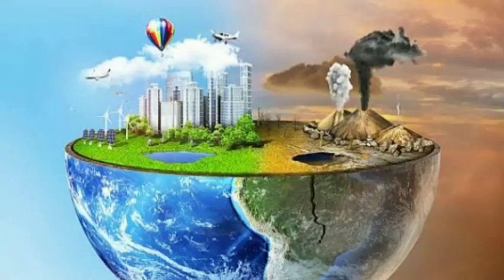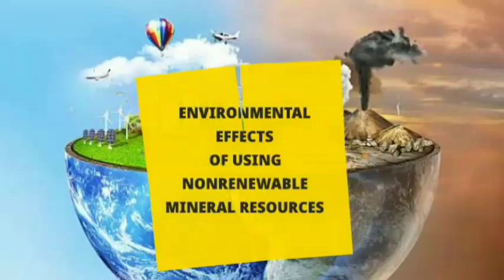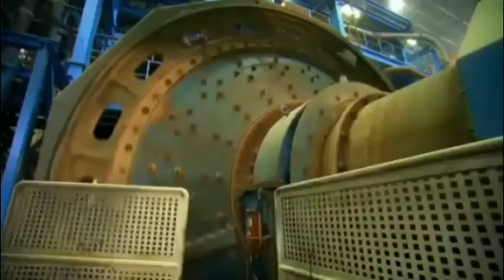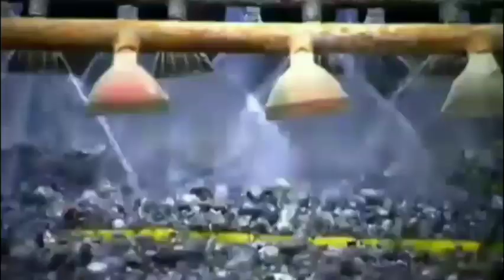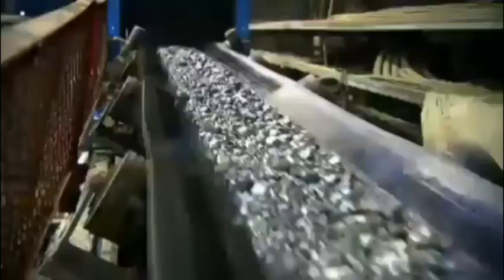Environmental Effects of Using Non-Renewable Mineral Resources. Every metal product has a life cycle. For instance, a life cycle of a car. At first, the mining company will mine the mineral to extract the metal ore and separate it from the waste materials. Afterward, it will be processed through smelting, melting, and finally converting it into a new car.